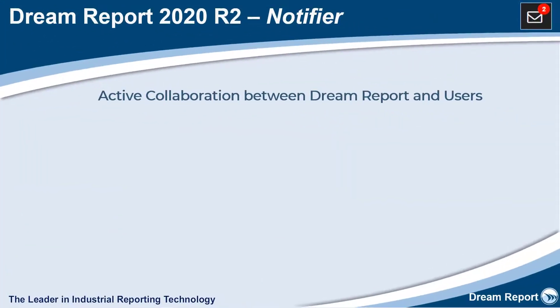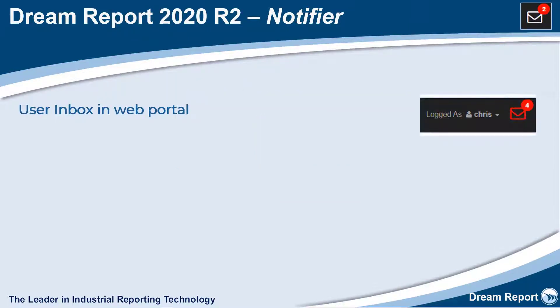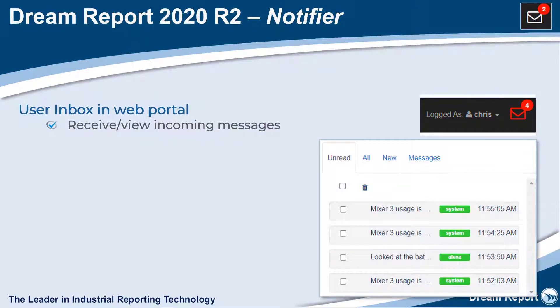The new Notifier technology enables user notifications across the system. Notifications, which are messages or emails, can be automatically triggered or manually sent between users in the DreamReport web portal. A user-specific inbox appears in the web portal, from which a user can read and manage their messages, which can be initiated both by the system and from other users.